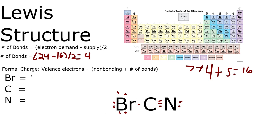Let's check our formal charges. Bromine has 7 valence electrons. We have 6 non-bonding electrons plus 1 single bond. So 7 minus 7 equals 0. That's good.